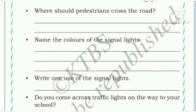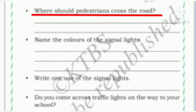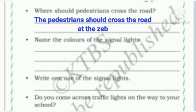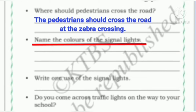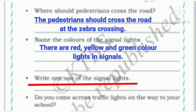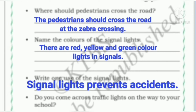Let us answer some questions to check our knowledge on traffic signals. Where should pedestrians cross the road? The pedestrians should cross the road at the zebra crossing. Name the colors of the signal lights — there are red, yellow, and green color lights in signals. Write one use of signal lights — signal lights prevent accidents.